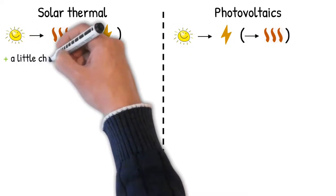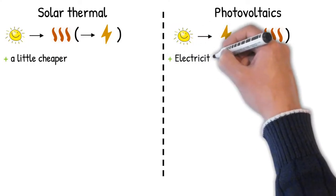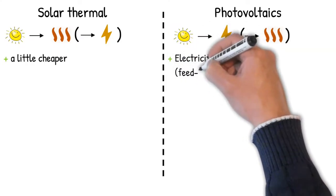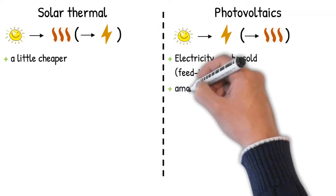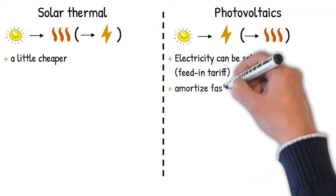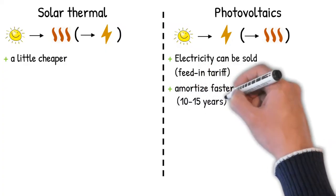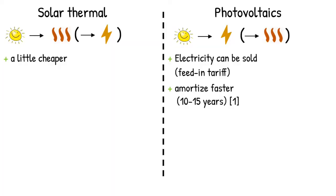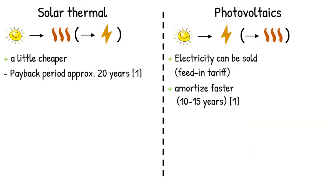A solar thermal system is generally cheaper to purchase than a PV system. Due to feed-in tariffs and rising electricity prices, however, PV systems usually pay for themselves somewhat more quickly than solar thermal systems. On average, a PV system pays for itself after about 10 to 15 years, a solar thermal system rather after 20 years. However, the deviations from these figures can be very large in individual cases, depending on their application and location.